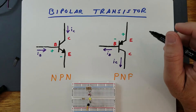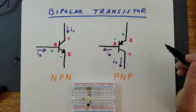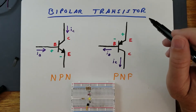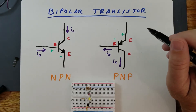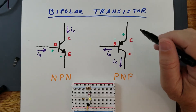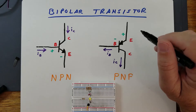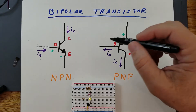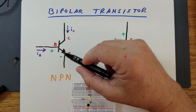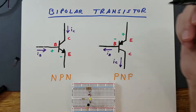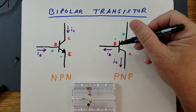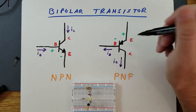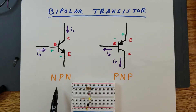What is a transistor? Specifically, a bipolar junction transistor is a three-terminal semiconductor device that can be used to amplify current. The three terminals are the emitter, the base, and the collector. Two types of bipolar transistors are the NPN and the PNP.